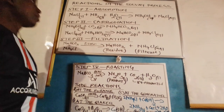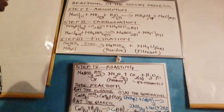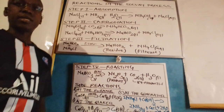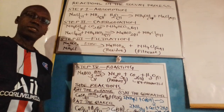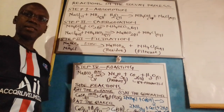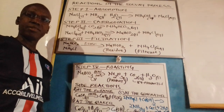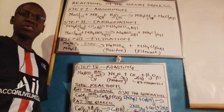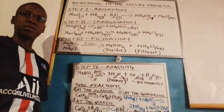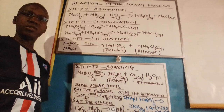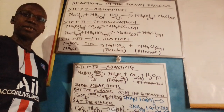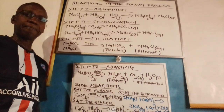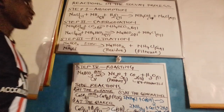Welcome. To manufacture sodium carbonate, we need a brine solution, which is concentrated sodium chloride; ammonia gas obtained from the Haber process; limestone or coke, which is used to produce carbon dioxide; and water, which is used as a solvent.